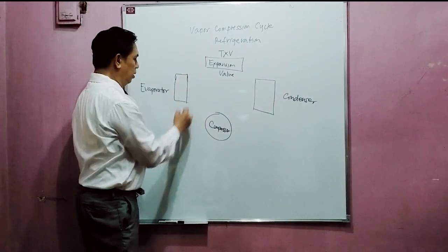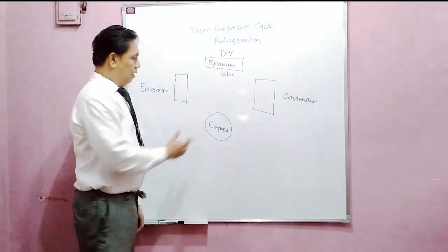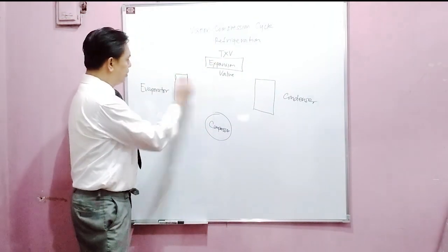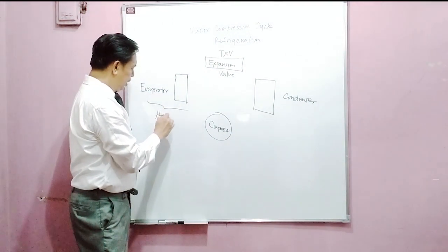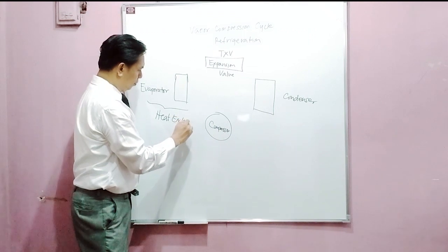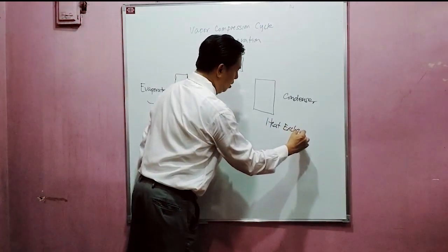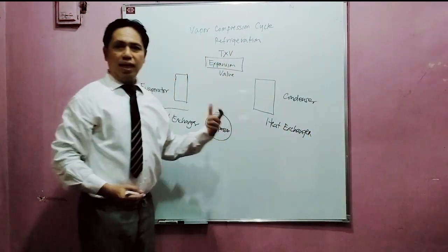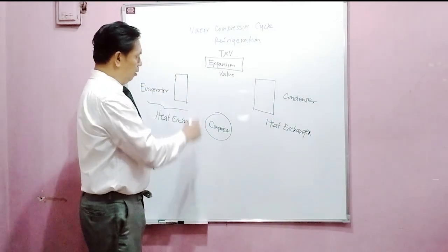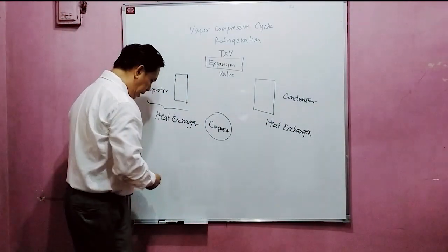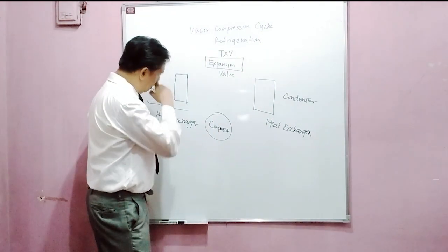These are the four components of the refrigeration system. Let me explain the parts first. These two — the condenser and the evaporator — are called heat exchangers, meaning they are the machines that allow the transfer of heat, the exchange of heat, from higher to lower temperature.